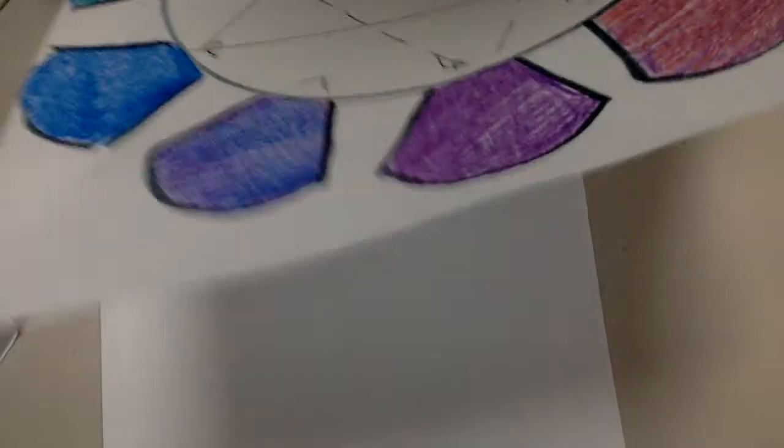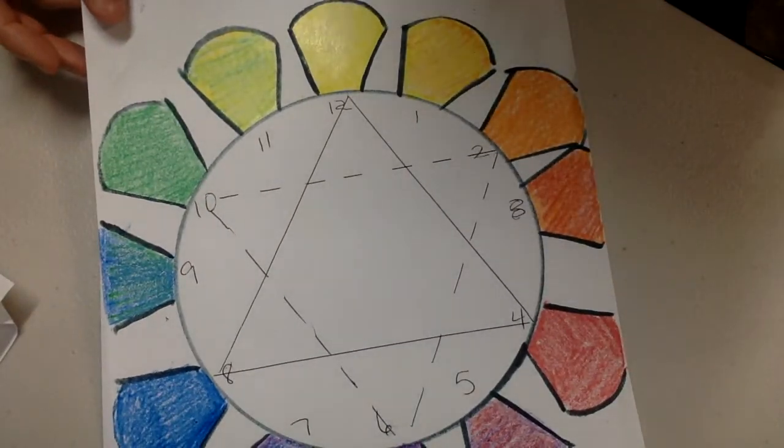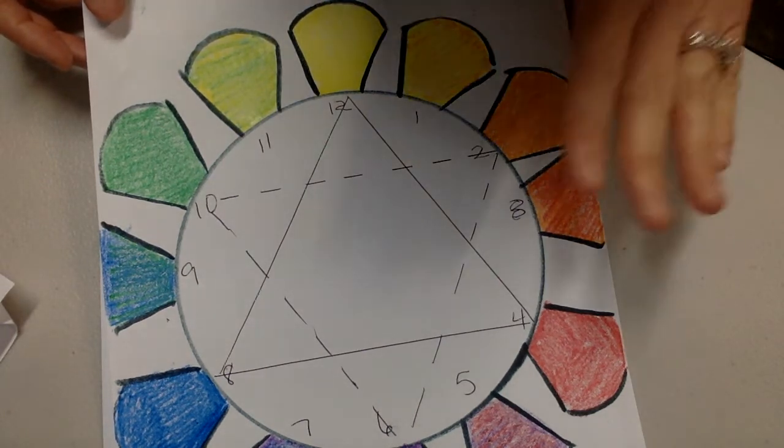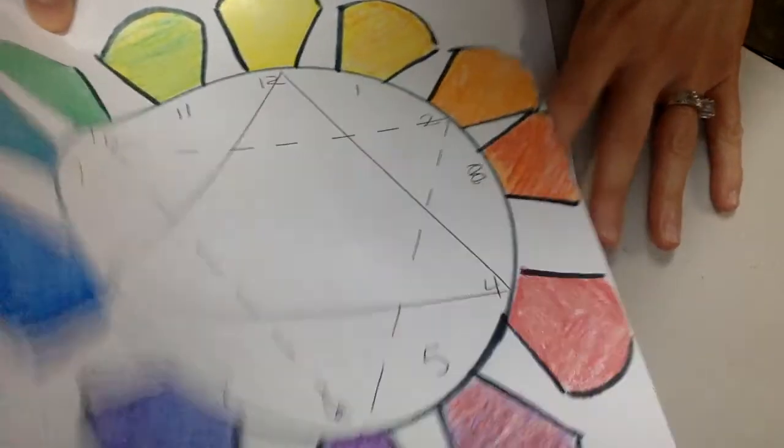Hi fourth grade, today is day number one of our guitar color wheel value scale project. We're gonna set up our guitar drawing today. We're gonna draw it all in, we're not gonna color in, but remember we're gonna base part of the guitar off our color wheel and we'll talk more about that in a little bit and then the handle will be what we call a value scale.